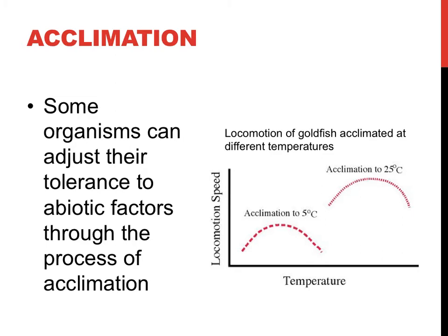Examples of acclimation in humans would involve skin color darkening if you move to a more tropical location, or producing more red blood cells if you move to a higher elevation. These examples of acclimation would take weeks or months to complete, and they would result in an adjusted tolerance to an abiotic factor, such as sunlight exposure, air pressure, and the lower amounts of available oxygen.